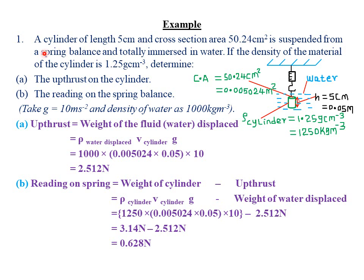The cylinder is suspended from a spring balance and totally immersed in water. The density of the material of the cylinder is 1.25 g per cubic centimeter. We convert to SI units, which are kg per cubic meter. We know that 1,000 kg per cubic meter equals 1 g per cubic centimeter. So 1.25 g per cubic centimeter gives us 1,250 kg per cubic meter.